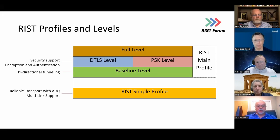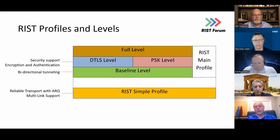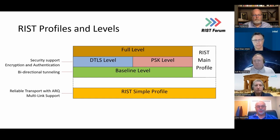Here's a diagram of RIST profiles and levels. Simple Profile gives you reliable transport with ARQ and multi-link support. Main Profile gives you tunneling, which simplifies your IT and adds security — encryption and authentication. Baseline gives you tunneling, and the DTLS or PSK level adds encryption and authentication. That's just to set up the naming.